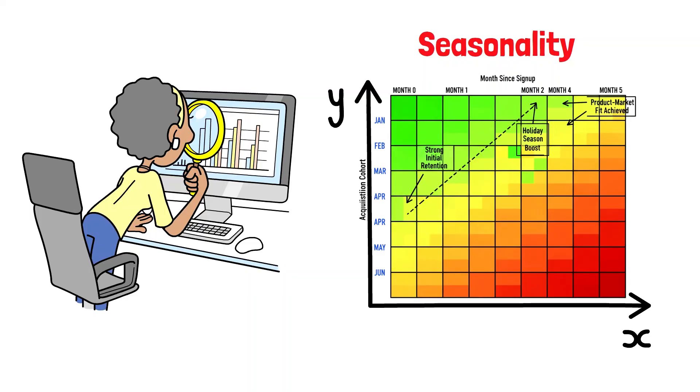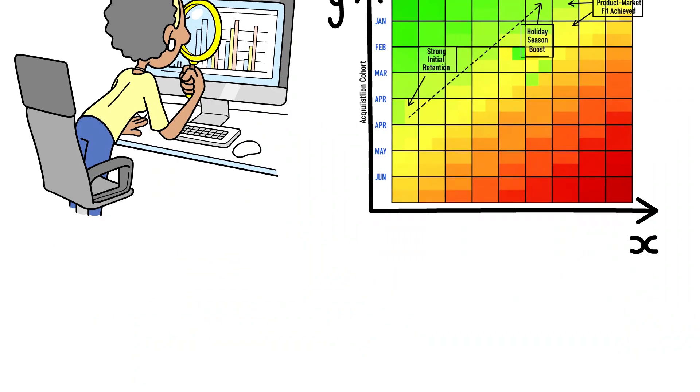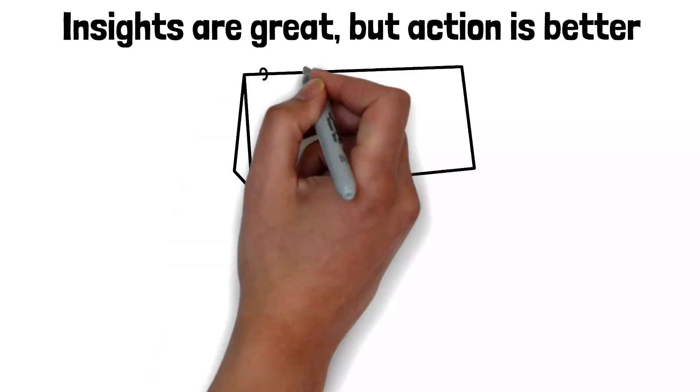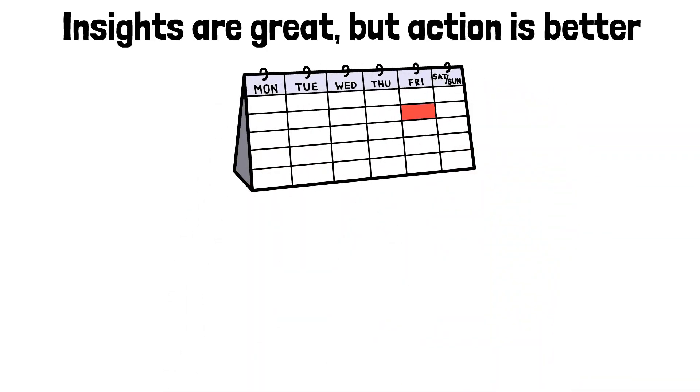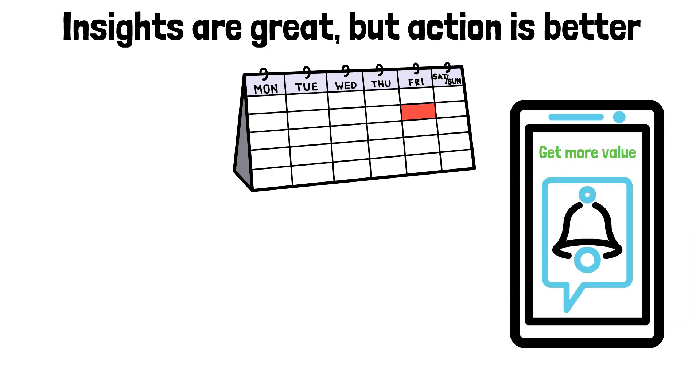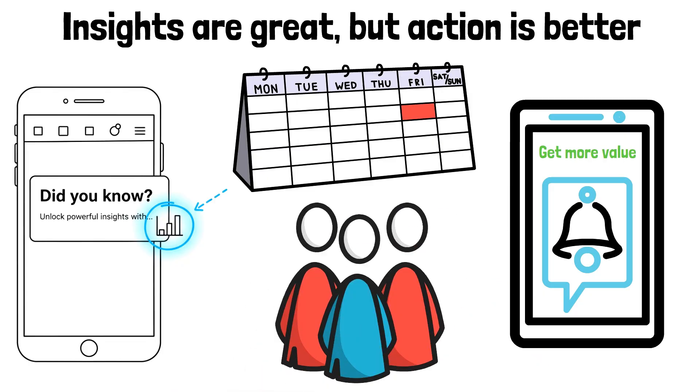A strong, stable retention rate across cohorts is a great signal of product-market fit. Insights are great, but action is better. If you see a drop-off after week two, you can trigger lifecycle messaging, like a targeted email with tips for getting more value. If a cohort that used a specific feature has higher retention, you can create in-app messages to educate other users about that feature.